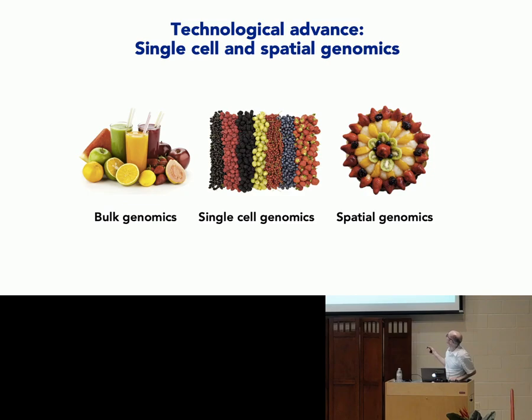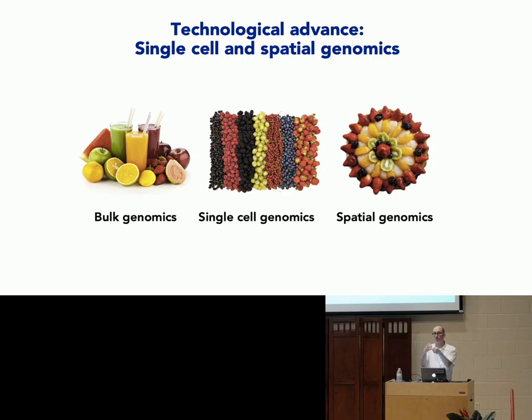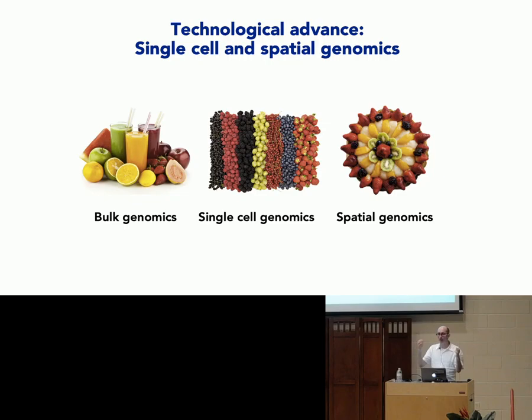There's a recent technological advance called single cell genomics. For many years we've been able to measure gene expression data using various technologies. But those technologies relied on taking a tissue and taking a pretty big sample — like a chunk of a particular tissue — and putting it all together to measure gene expression, getting an average gene expression over all the genes and all the cells. That's kind of like a smoothie — you take all the fruit and blend it up.